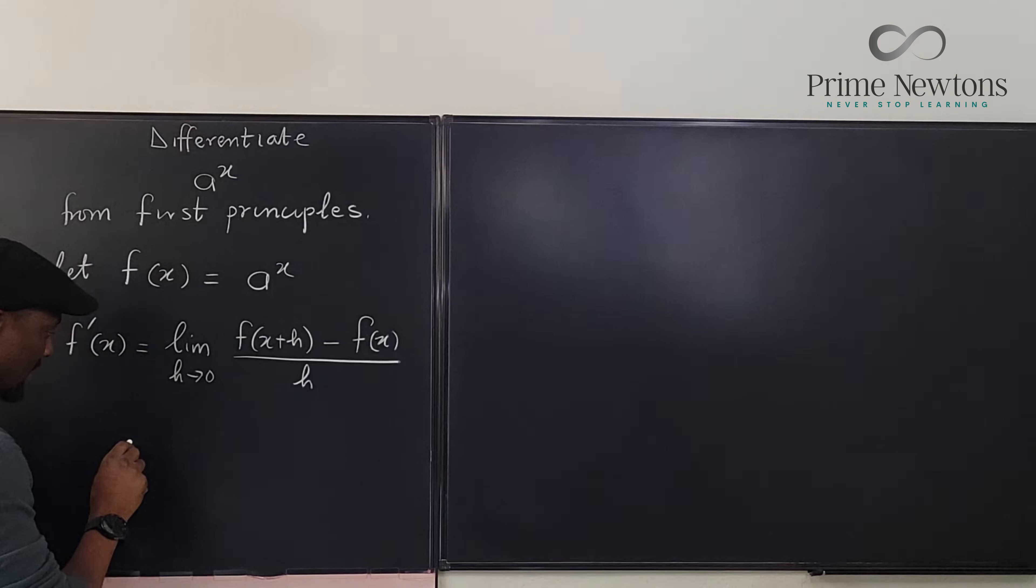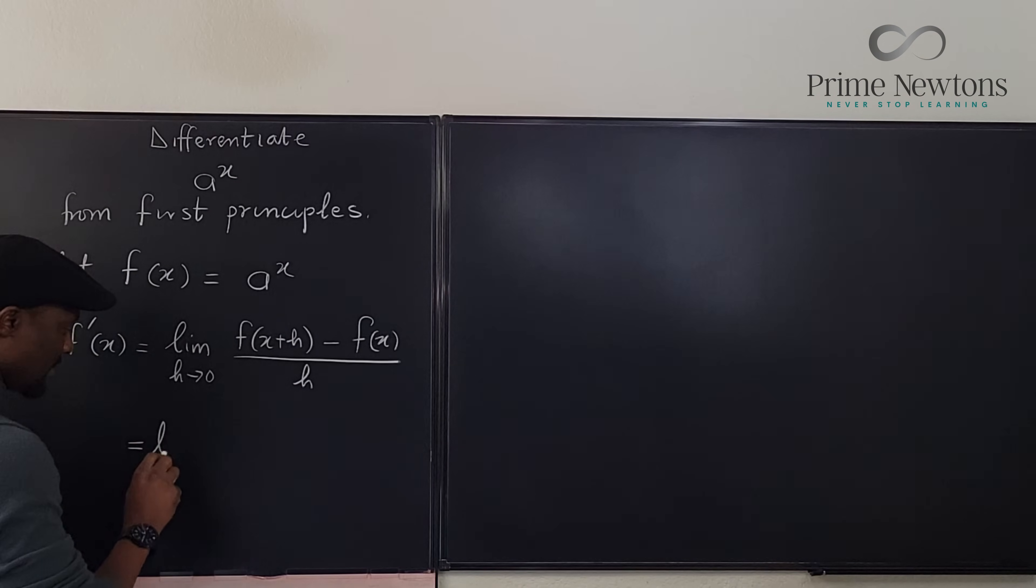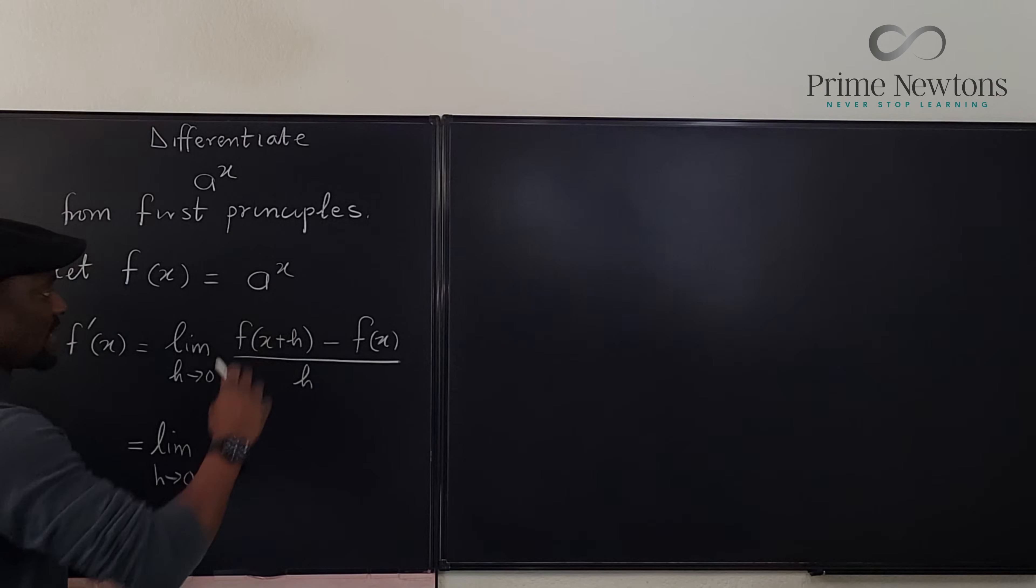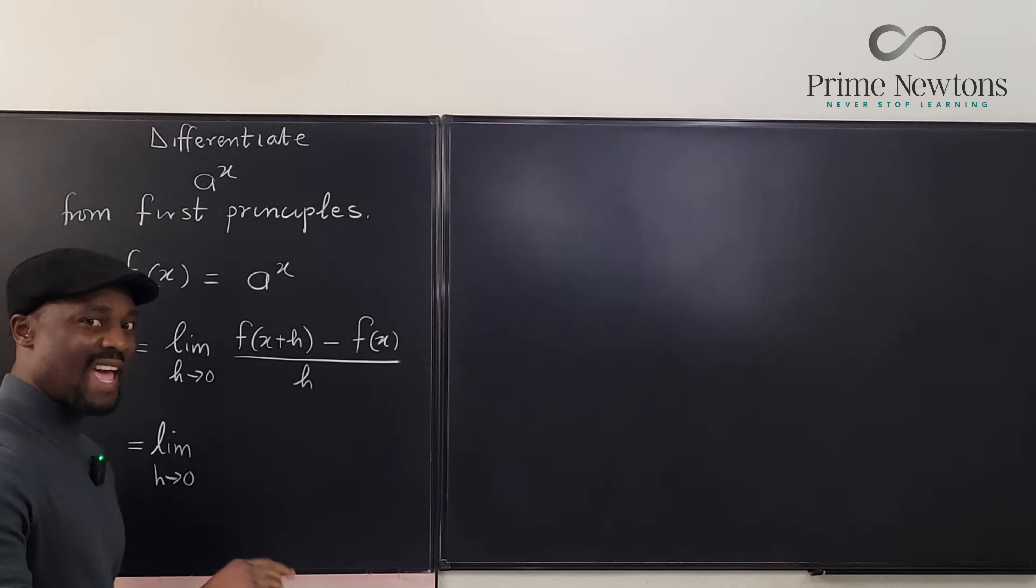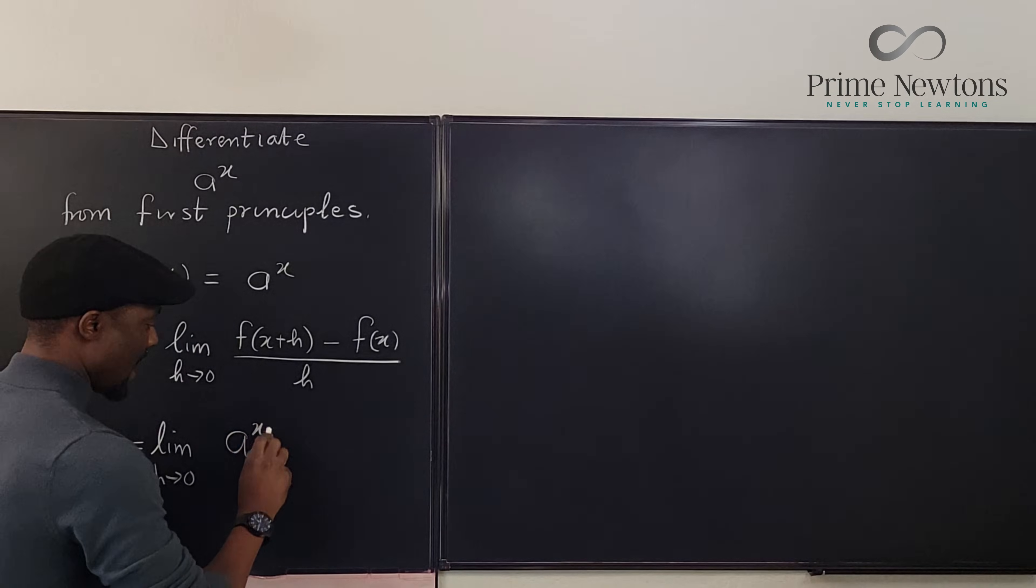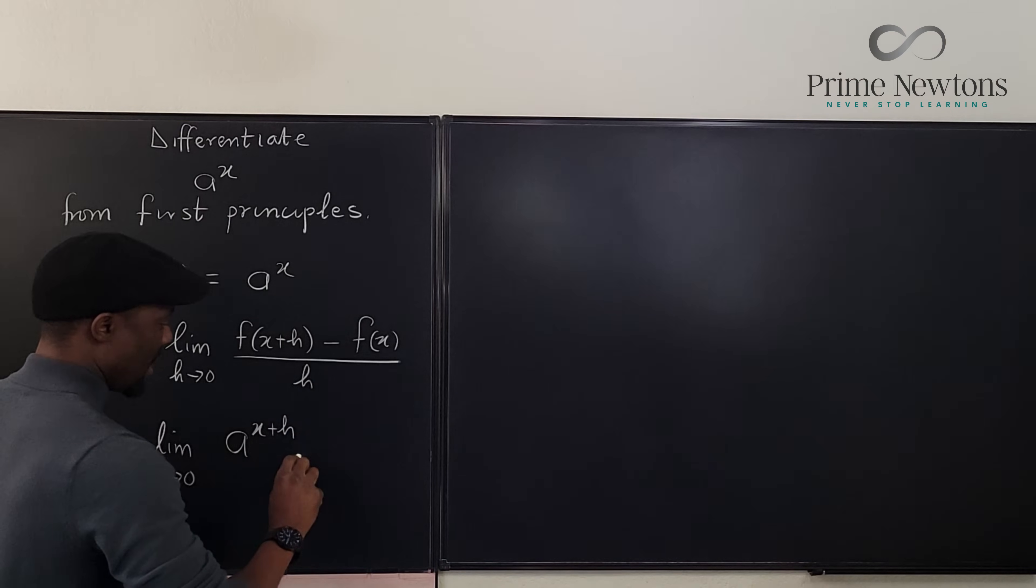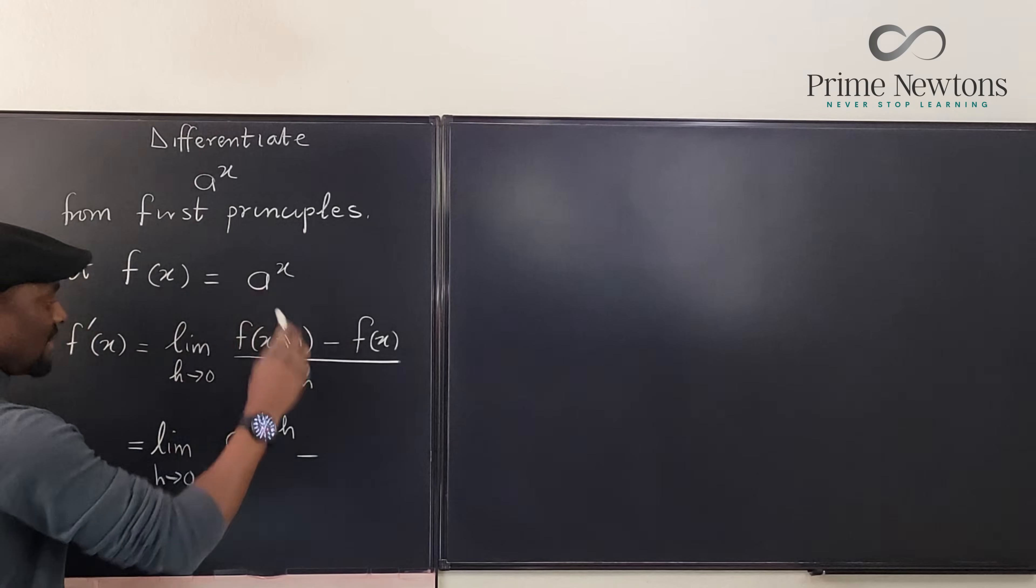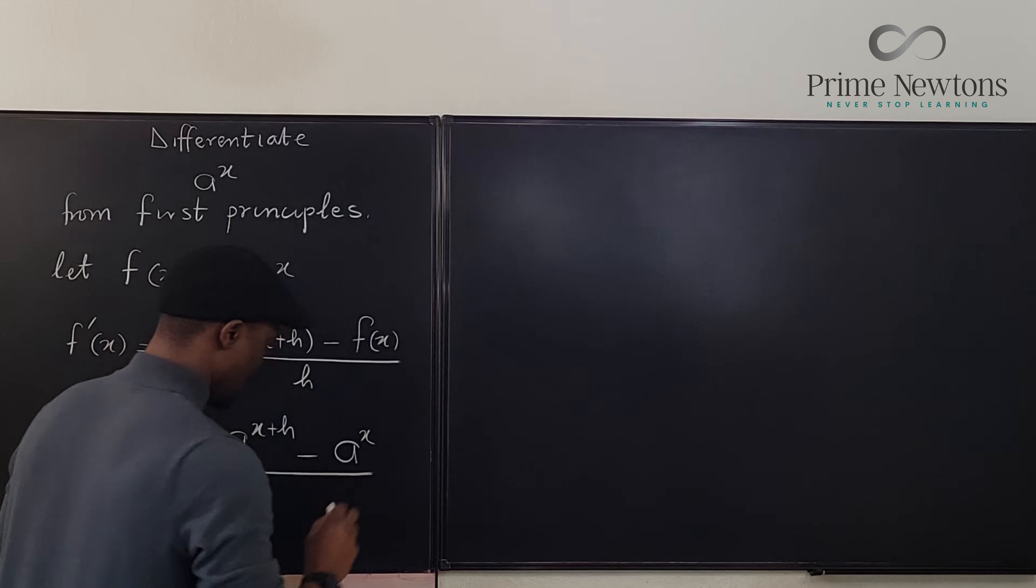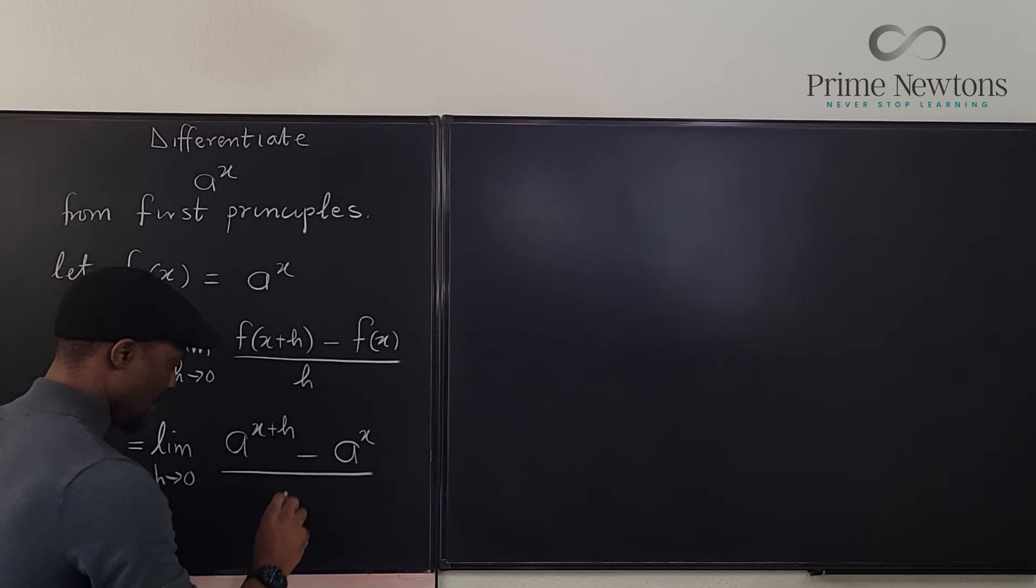So this is equal to the limit as h approaches zero of, this is the function, we want to find f of x plus h so it's going to be a to the x plus h minus f of x which is a to the x and everything divided by h.